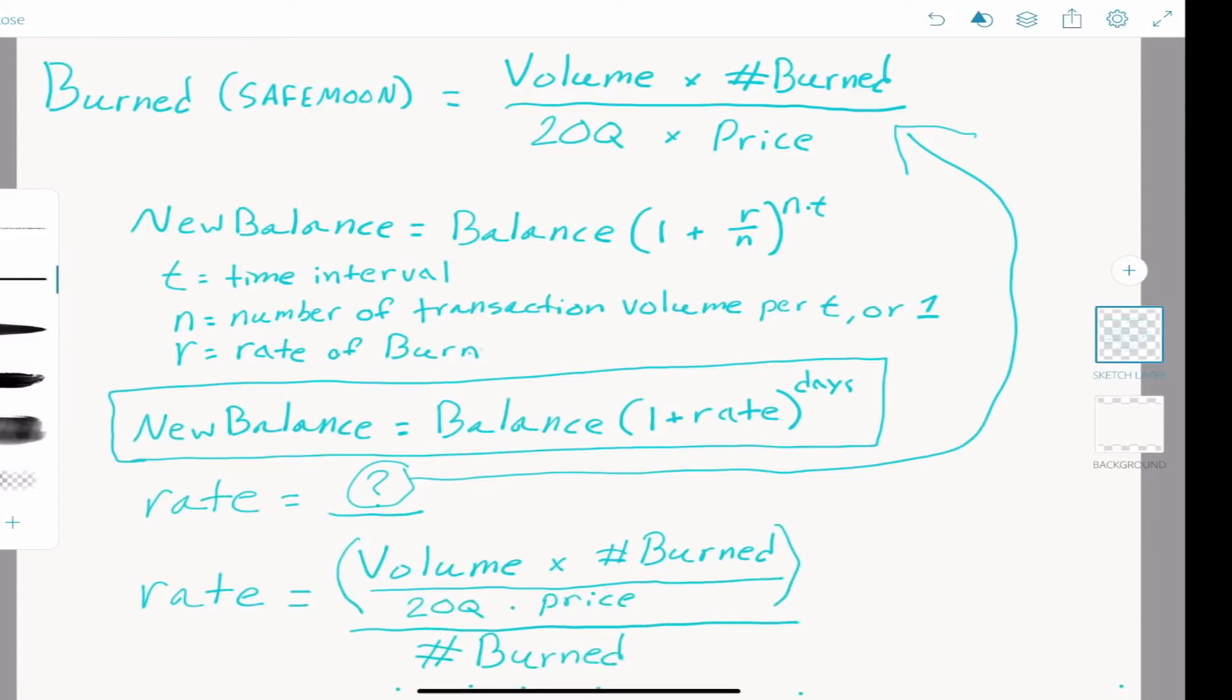From here we get this messy equation: rate equals volume times the number of tokens in the burn wallet divided by 20 quadrillion times price, and then we divide this entire answer by the number of tokens in the burn wallet again. But what happens? The number of tokens in the burn wallet cancels out, leaving us with a rate that only relies on volume and price.